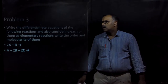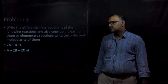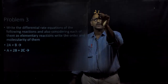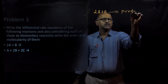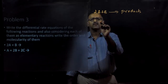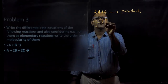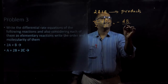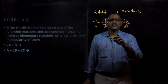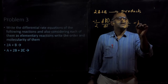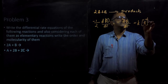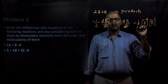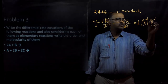The next problem: write the differential rate equations for the following reactions, considering each as an elementary reaction, and write the order and molecularity. The first reaction is 2A + B → products. The differential rate equation is: −(1/2) d[A]/dt = −d[B]/dt = k[A]²[B]¹. Here, 2 and 1 are partial orders, so the overall order is 2 + 1 = 3.